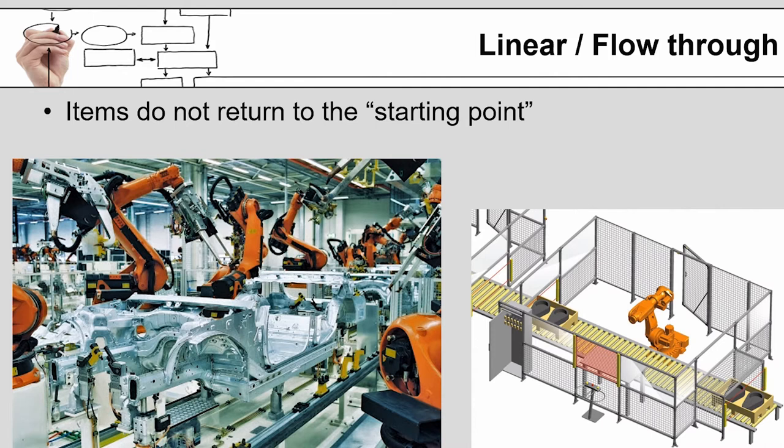The other end of that extreme is something like an airplane or a ship. Generally everything comes to wherever the product is being made, so the flow is almost in a way backwards. It may still be a linear flow, but it's all the equipment that is flowing past the static item.